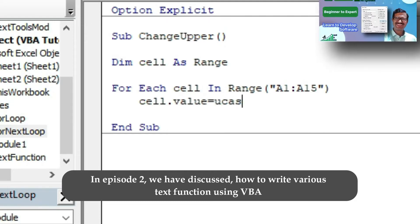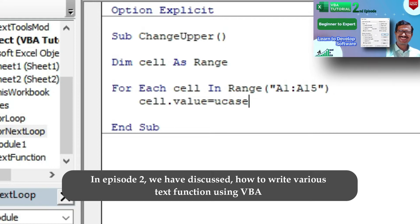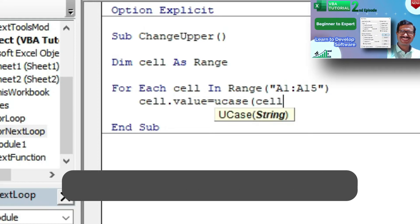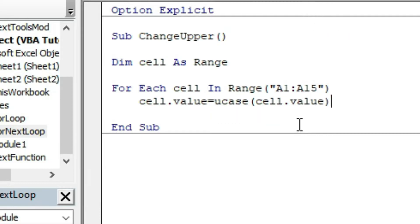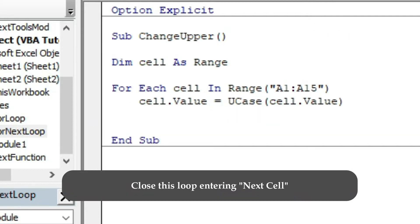In episode 2, we have discussed how to write various text functions using VBA. You can watch that video by clicking the I button above. Close this loop by entering Next cell.